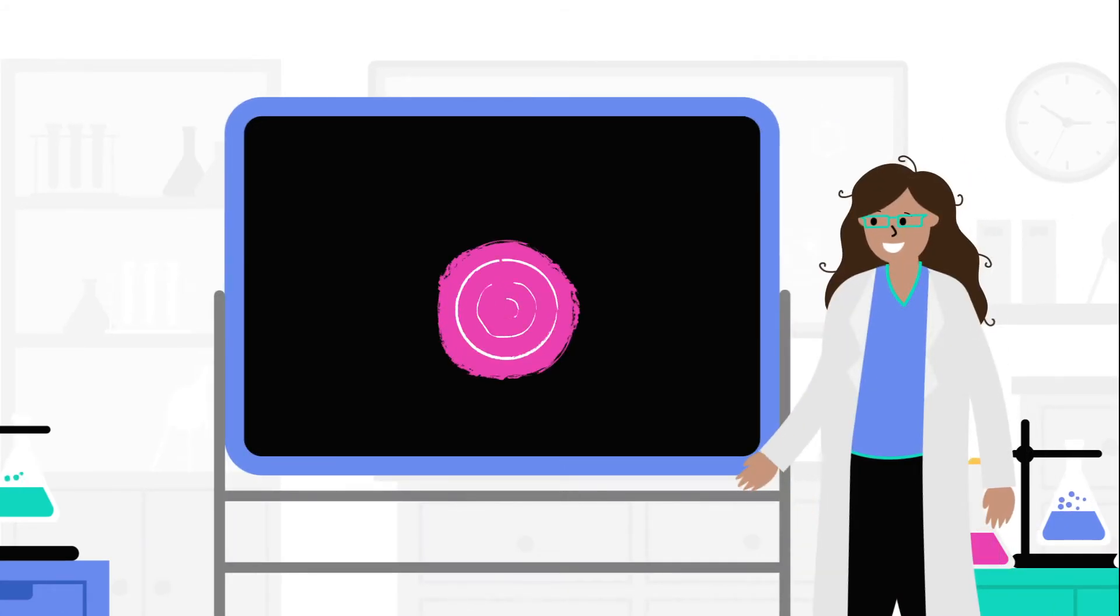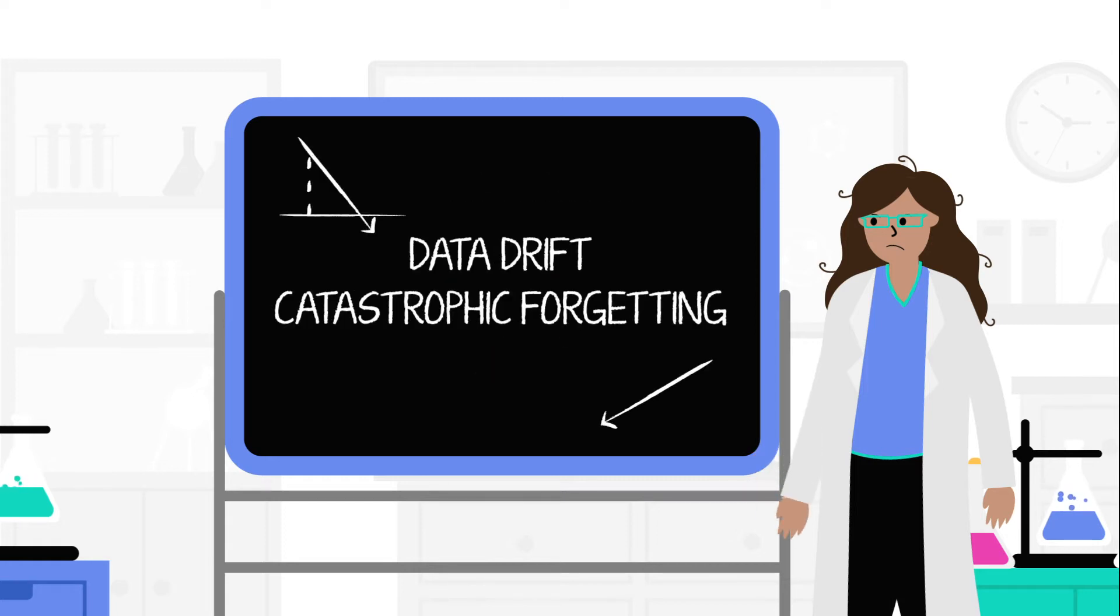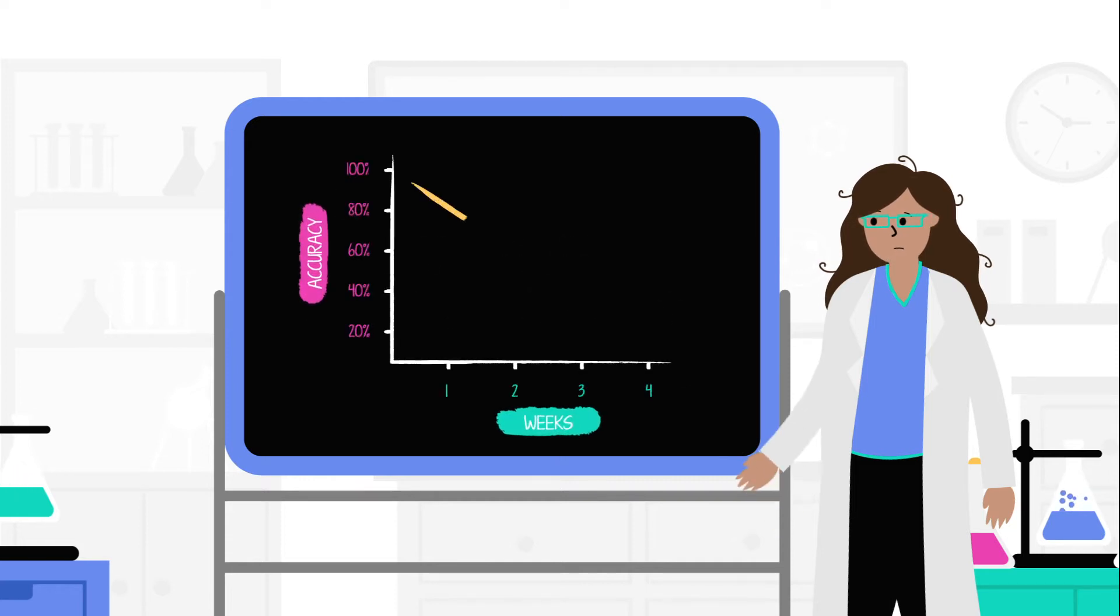But arguably the biggest problem of all is that this process creates a lack of accuracy. These AI models are seriously hampered by data drift and catastrophic forgetting, which is the imaginative name given to the issue that when training a model with new data, the model forgets its existing data.